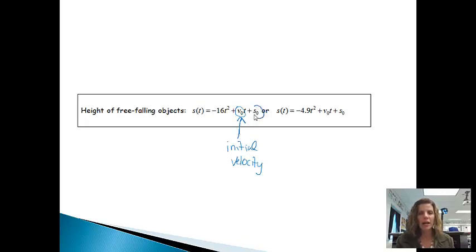And then plus s sub zero. Remember s is a position and the sub zero means at time equals zero. So the s sub zero stands for the initial position—where was the object when it was thrown or dropped or whatever?